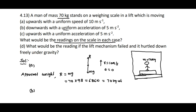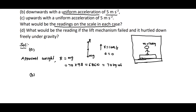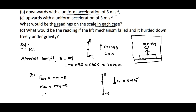For Case B, moving downwards with uniform acceleration of 5 m/s². In the free body diagram, the weight mg is greater than the normal reaction R, and the lift is accelerating downwards at 5 m/s². Since mg is greater than R, we write: F_net = mg − R. By Newton's second law, F_net = ma, so mg − R = ma, therefore R = m(g − a).